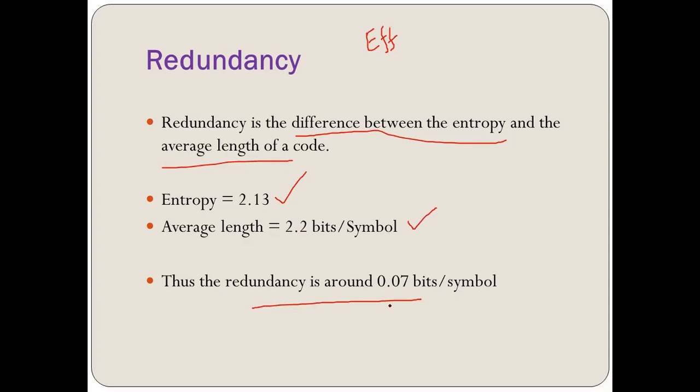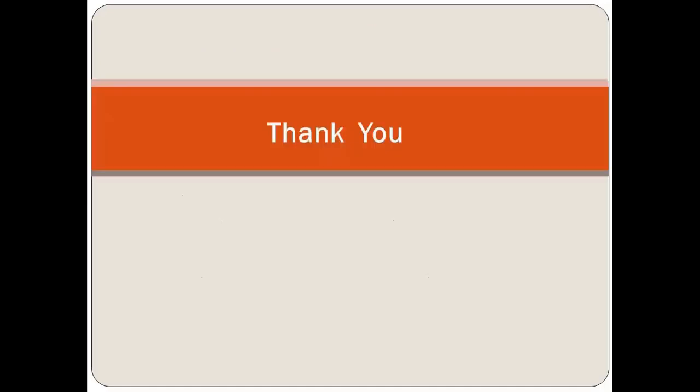So if a question asks you to calculate the redundancy or efficiency of a Huffman code, first find the codewords using the algorithm, then calculate the average length, then the entropy, and finally the redundancy. I hope this is clear. Thank you very much.